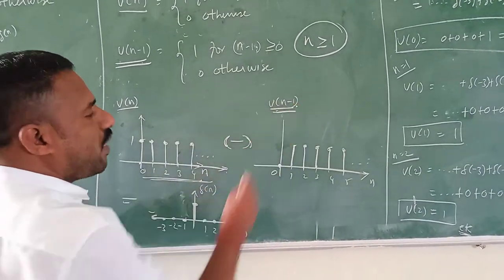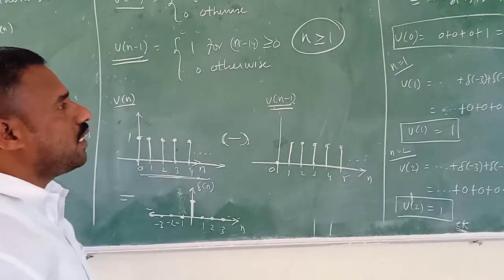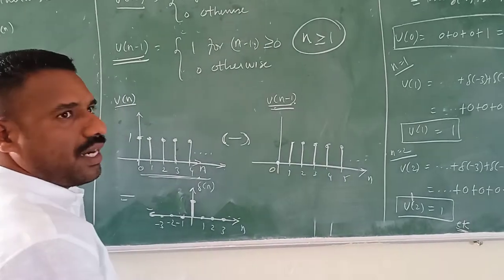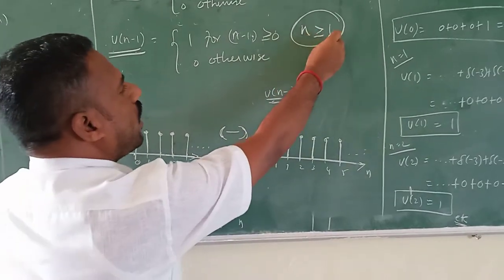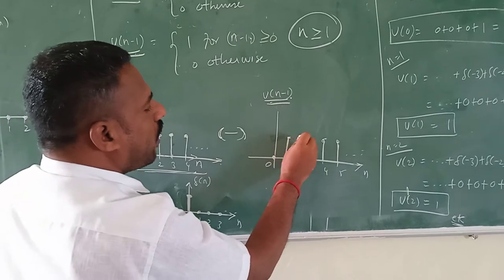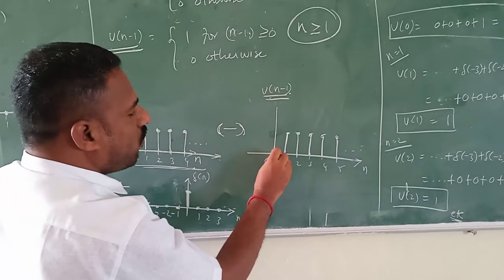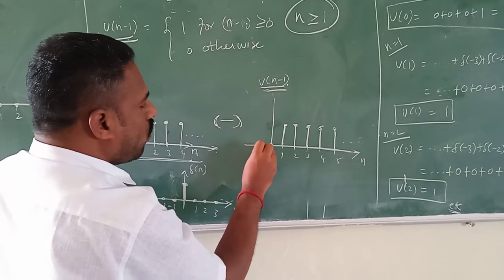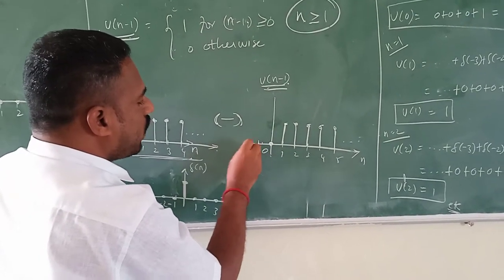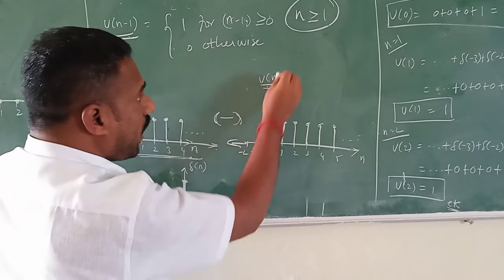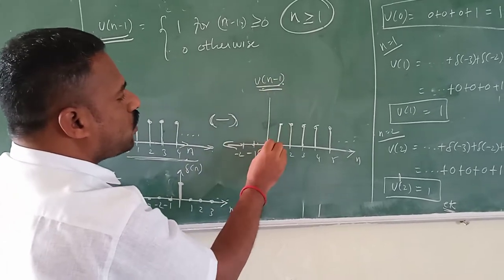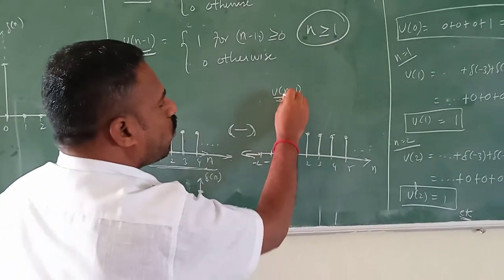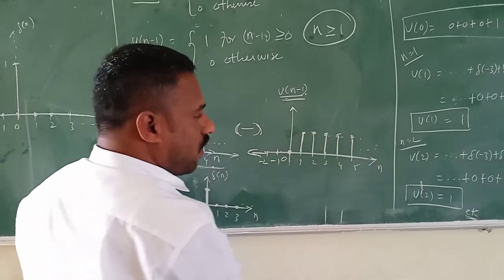Now for u of n minus 1: when the n value is 1 and greater than 1, you are getting amplitude 1. When n equals 0, you are getting 0. When n equals 0, minus 1, and minus 2, you are also getting 0. So for n equal to 0 you get 0, and for n equal to 1 and greater than 1 you get unit amplitude. This is u of n minus 1.